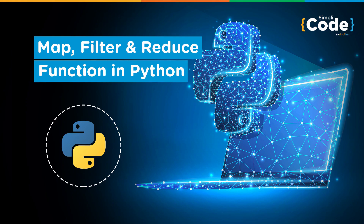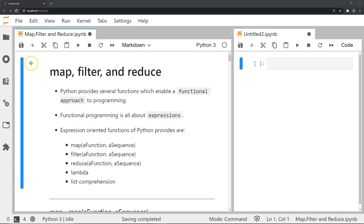Hello everyone and welcome to another video on Python programming. In this video we will be covering the topics of map, filter, and reduce functions in Python. Python provides several functions that enable a functional approach to programming. Since functional programming is all about expressions, some of these expression-oriented functions are lambda functions, list comprehensions, map, filter, and reduce. We've already covered lambda and list comprehensions, so now let's cover map, filter, and reduce.